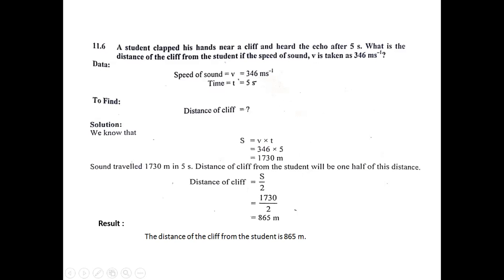The student clapped, producing sound that traveled from the student to the cliff. The cliff reflected the sound back towards the student's ears. The echo was heard 5 seconds after clapping, meaning the sound wave traveled from student to cliff and back in 5 seconds. We use the same strategy as the previous numerical: speed = 346 m/s, total time = 5 seconds, and we calculate the distance using s = v × t.